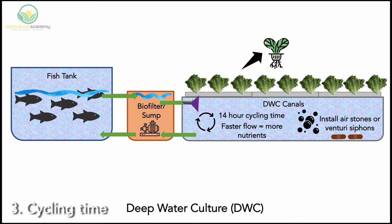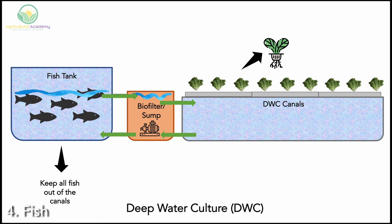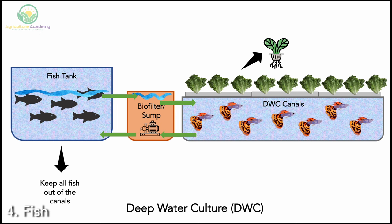Fourth, make sure to keep all fish out of the canals — they can eat the roots and spell doom for your system. However, some growers have had success with adding some carnivorous fish species, like guppies, to their canals. These fish will eat mosquito larvae, making for a more comfortable working environment.